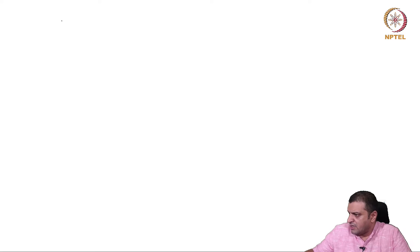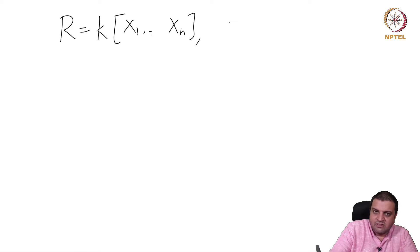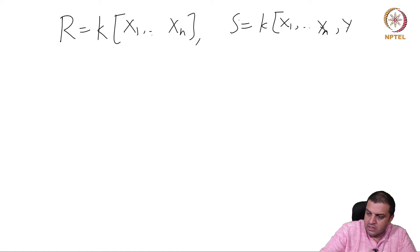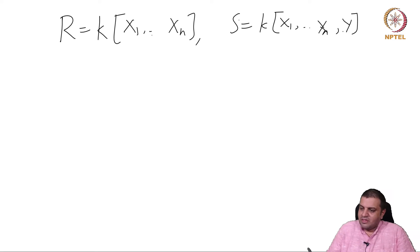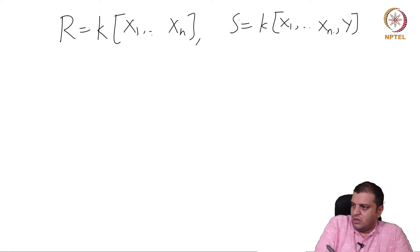Let us set up notation. R will be a polynomial ring in n variables over a field k, and S is a polynomial ring in n plus 1 variables, which I will denote as x₁ through xₙ — same as R — and y. So y will be used to homogenize.